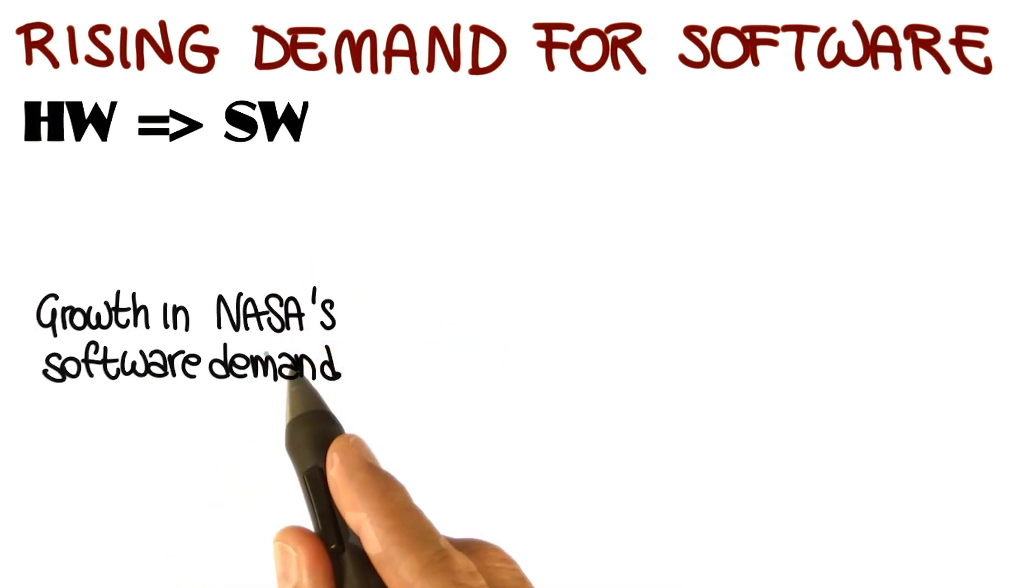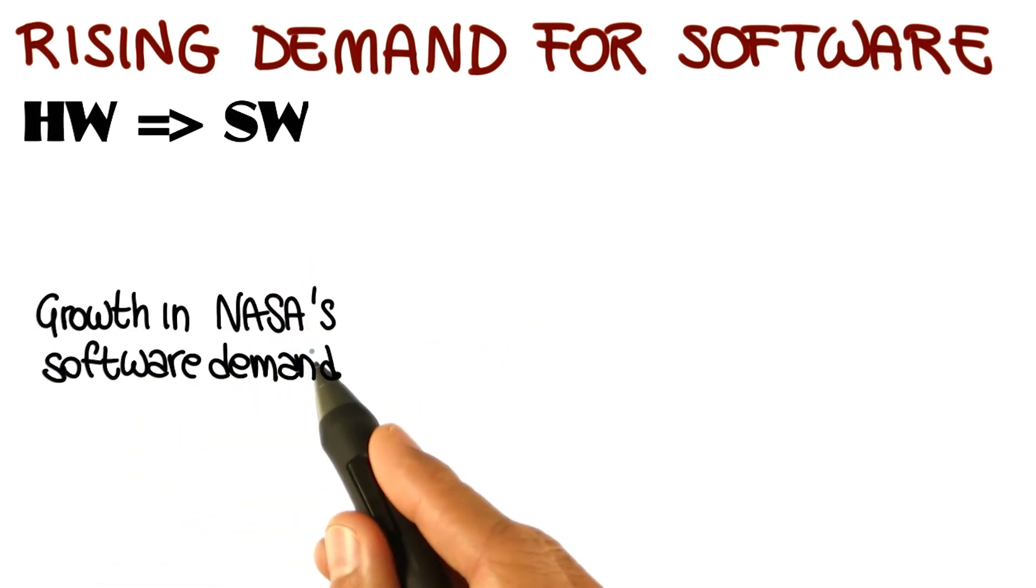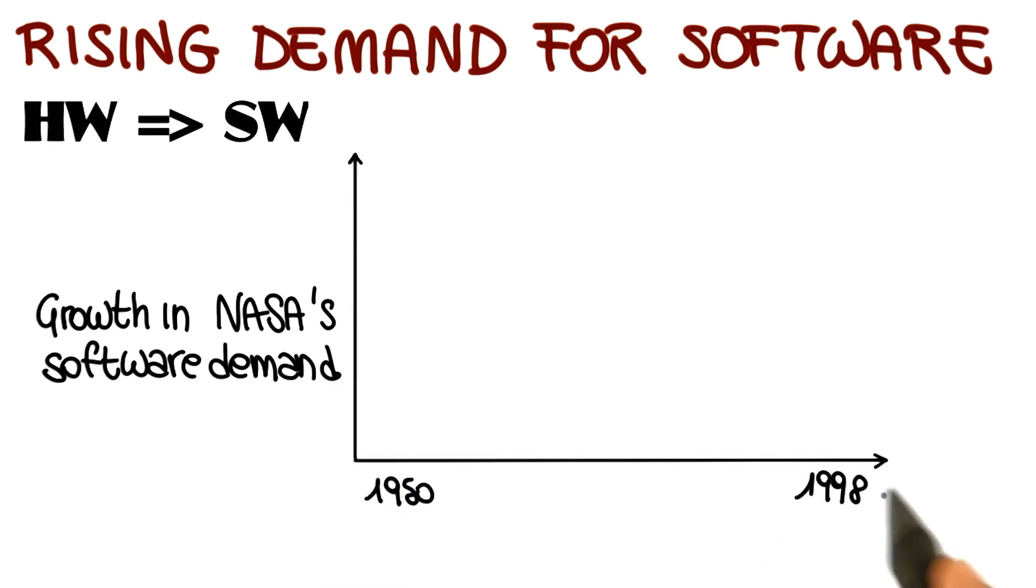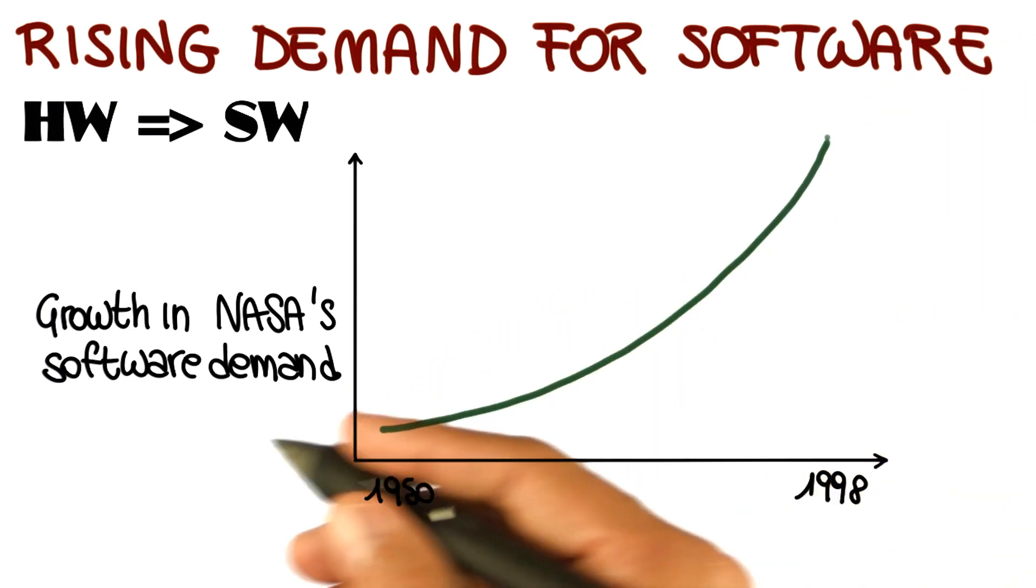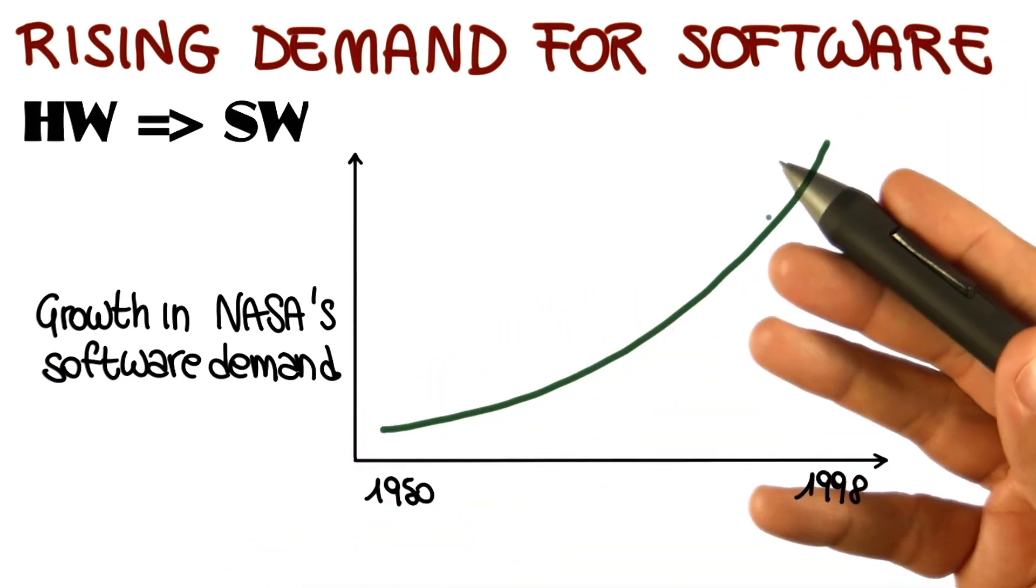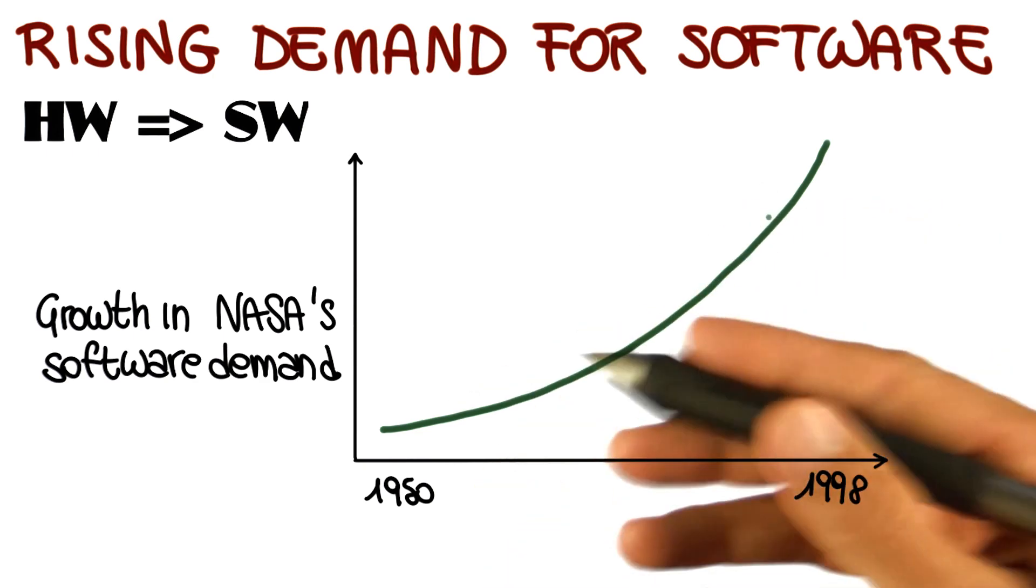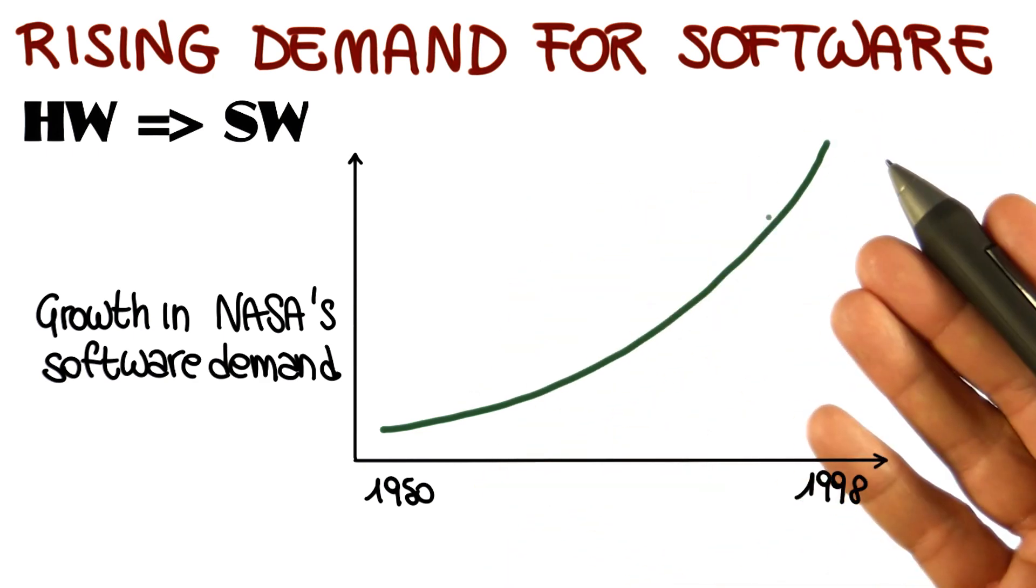To give you an example, I'm going to show you the growth in the software demand at NASA along those years, and in particular, from the 1950s to more or less 2000. And this is just a qualitative plot, but that's more or less the way things went. So the demand for software in NASA grew exponentially. And the same happened in a lot of other companies. For example, just to cite one, Boeing. So the amount of software on airplanes became larger and larger.